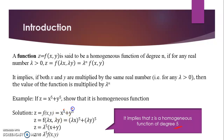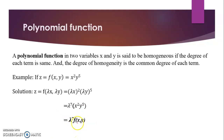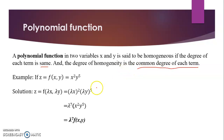Whenever both variables have the same power, the degree will also have the same power. In polynomial functions of two variables, they are said to be homogeneous if the degree of each term is the same. The degree of homogeneity is the common degree of each term.